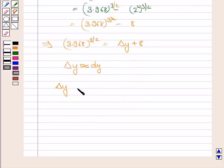So delta y is equal to dy by dx into delta x. Now dy by dx will be 3 by 2 into x to the power 3 by 2 minus 1 that is 1 by 2 into delta x and delta x is minus 0.032.